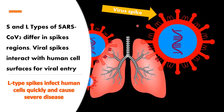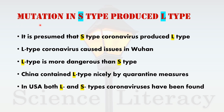SARS coronavirus 2 infects epithelial cells in the respiratory system and lungs, causing COVID-19 disease. S and L types of SARS coronavirus 2 differ in the spike region. Viral spikes interact with human cell surfaces for viral entry. L type spikes infect human cells quickly and cause severe disease. The scientists of the study also predict that mutations in S type produced L type. L type coronavirus caused major issues in Wuhan and is more dangerous than S type.